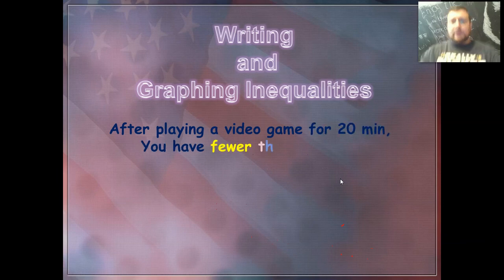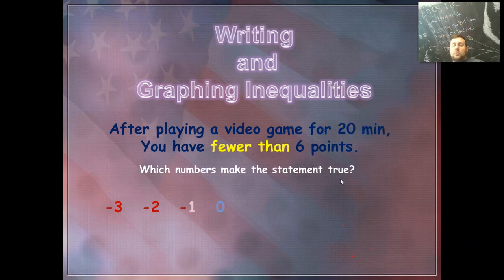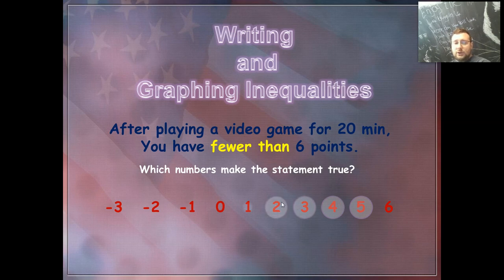And we have one more. After playing a video game for 20 minutes, you have fewer than six points. So fewer than six, that means it doesn't include six. So six is out. But then all the other numbers would be okay. Five, four, three, two, one, and so forth, right? I don't know how you could get negative points, but I guess you could.